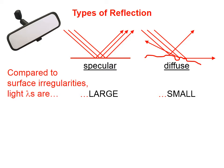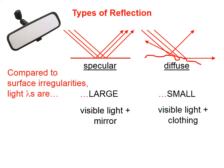For example, this mirror in the upper left exhibits specular reflection. The surface irregularities on the glass of that mirror are very small compared to the wavelengths of light, and the wavelengths of light don't even see those small imperfections — they reflect parallel to each other. Visible light with a mirror is an example of specular reflection.